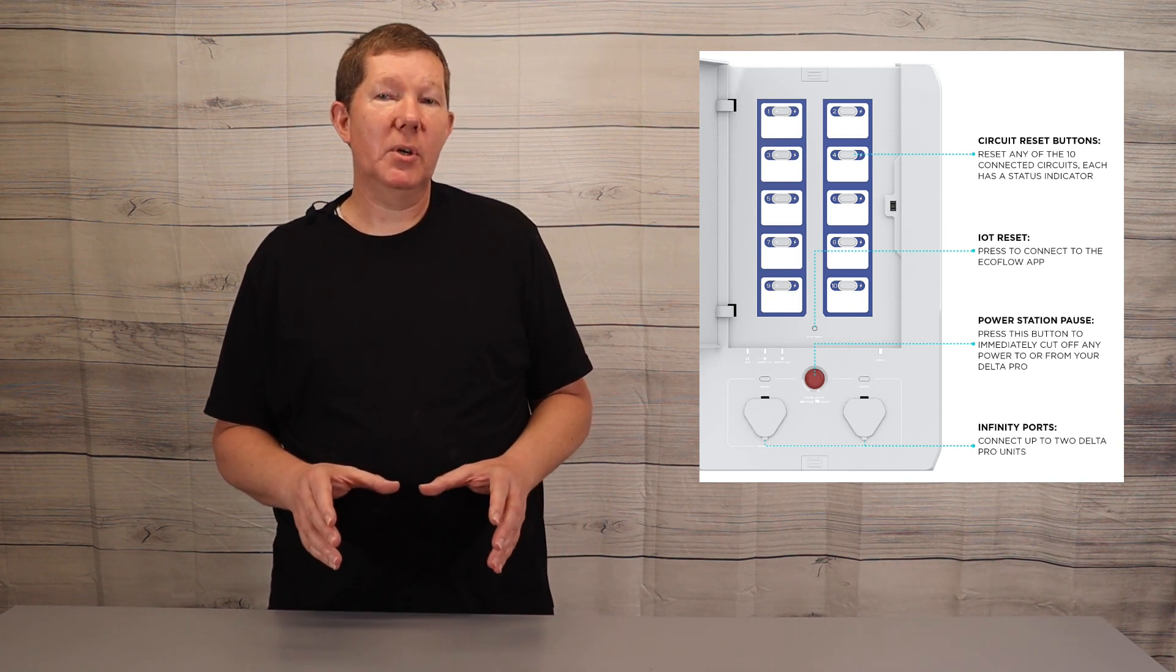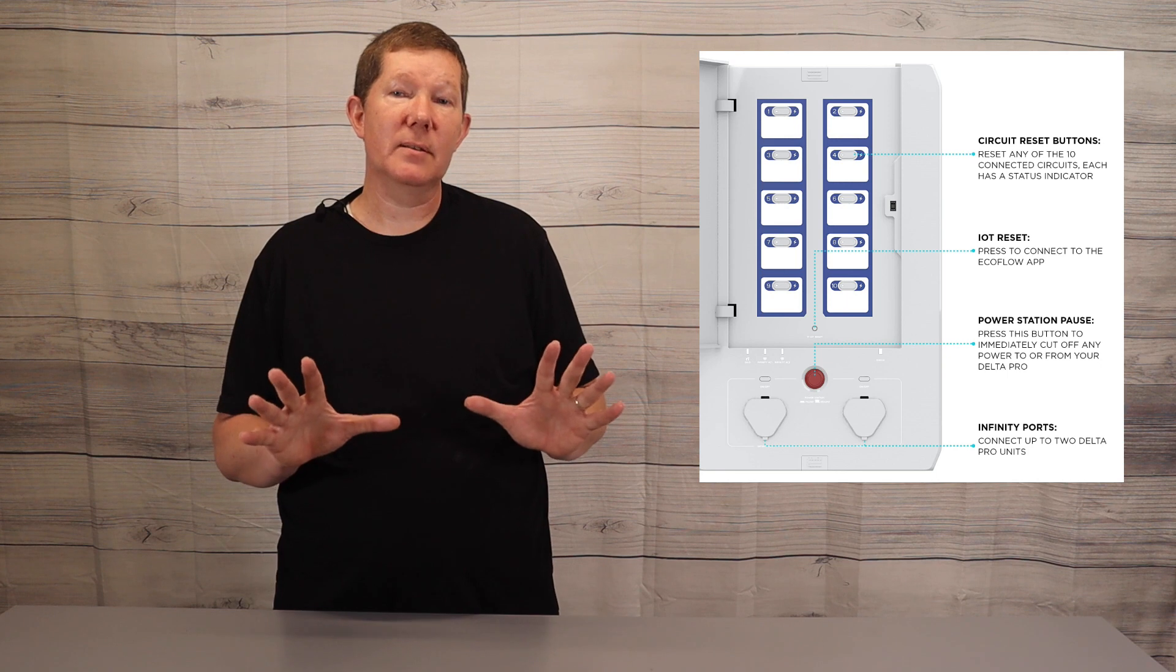Now with the smart home panel, you can power up to 10 circuits in your home. The great thing about having a home panel is you don't have to have a whole bunch of extension cords plugged into your Delta Pro and have extension cords running all over your home.